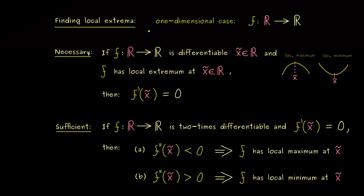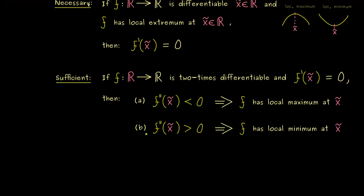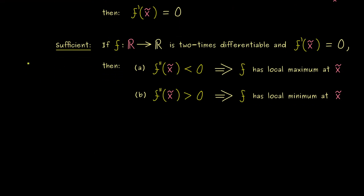So this is what we know from the one-dimensional case. The natural question is how we can translate this to the multivariable case. On one hand, we already know the first derivative very well — we can substitute it by the Jacobian matrix, the gradient, or the differential as an abstract map. A necessary condition should simply be that the gradient vanishes at the given point. However, for the sufficient criterion involving the second derivative, this translation is not clear at all, because we don't yet know what the second derivative should be for a multivariable function f.